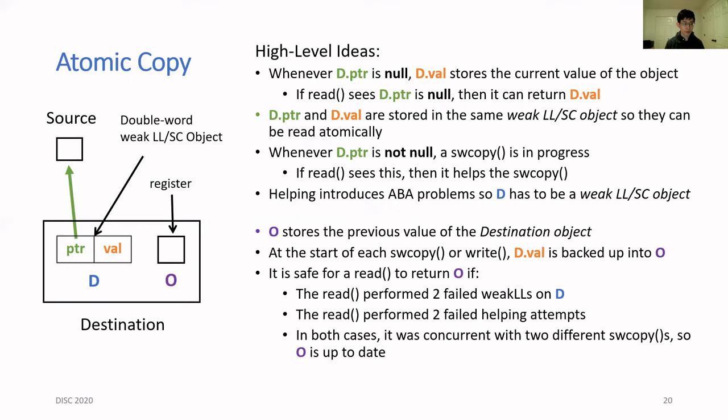To handle both of these problems, we introduced the register O, whose purpose is to store the previous value of the destination object. This previous value is maintained by the update operations. At the start of each single-writer copy and each write operation, it's going to read the value field of D and then back it up into O.